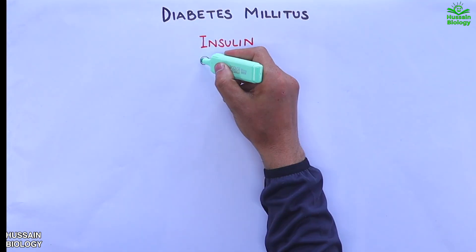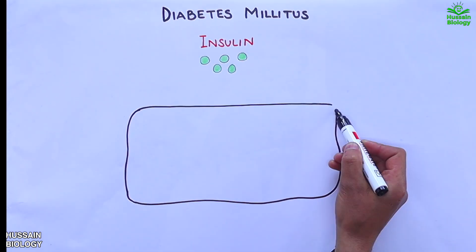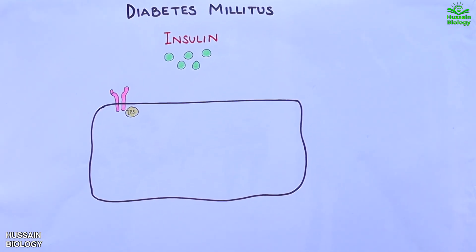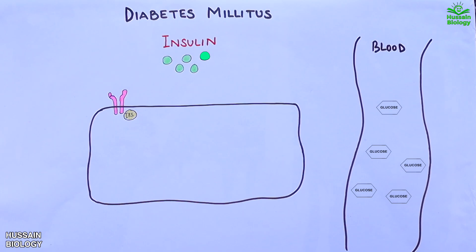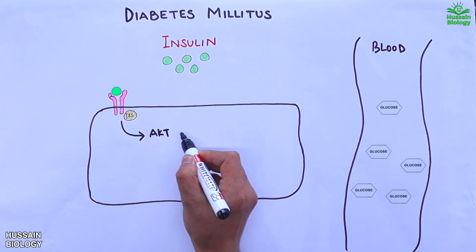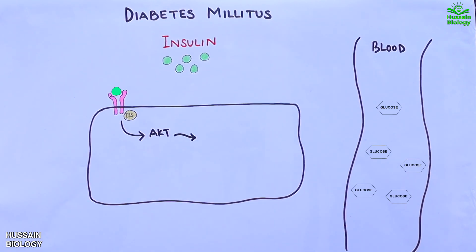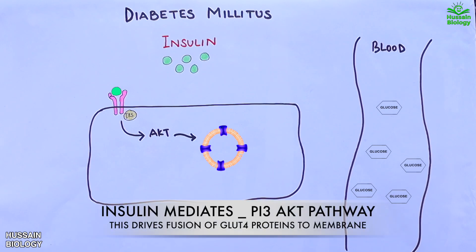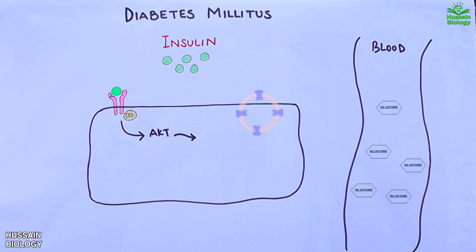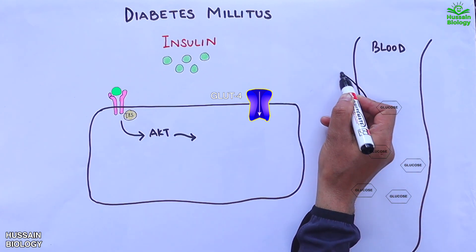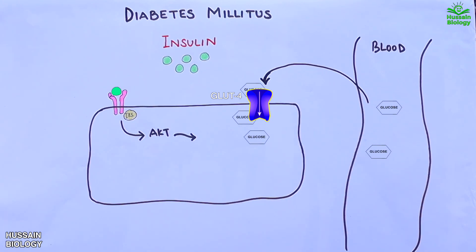In this diagram we have insulin molecules and a muscle cell with insulin receptors, and on the right we have a blood vessel containing glucose. First, insulin binds with the insulin receptors, causing their activation, which ultimately activates the AKT pathway. This AKT protein then acts on the GLUT4 vesicle and mediates fusion of the vesicle with the cell membrane, as shown in the animation. This vesicle fusion inserts GLUT4 — the glucose transporter — into the membrane, and glucose from the blood is then transported into the cell through these GLUT4 channels, which lowers blood glucose levels.